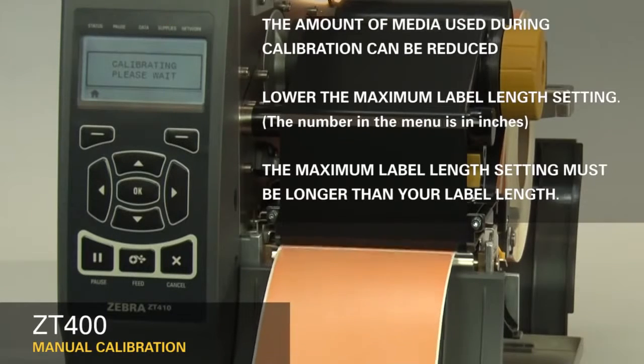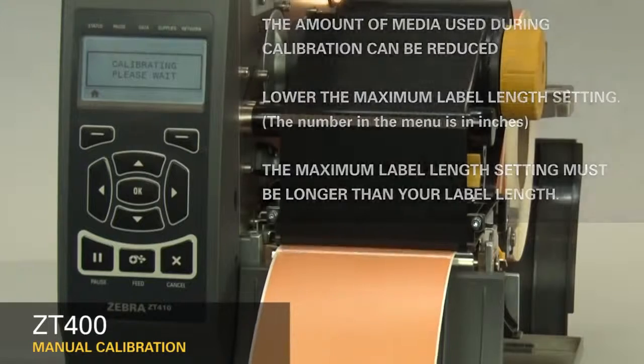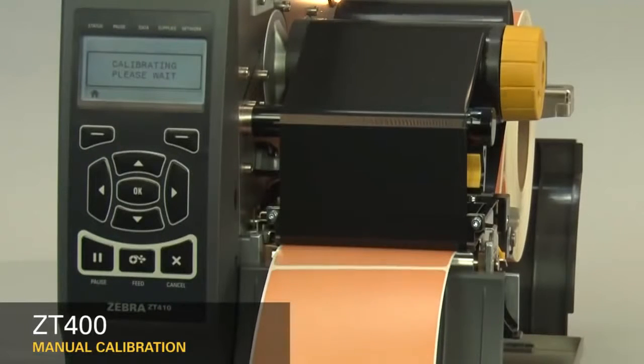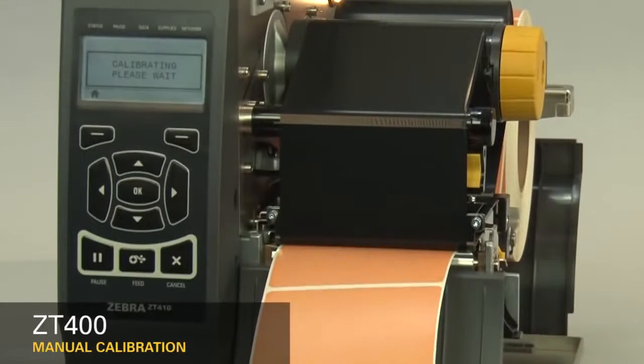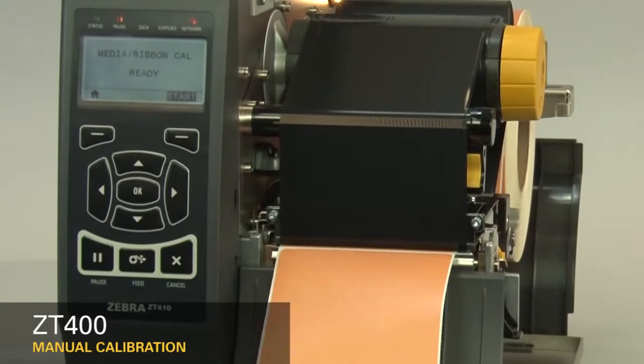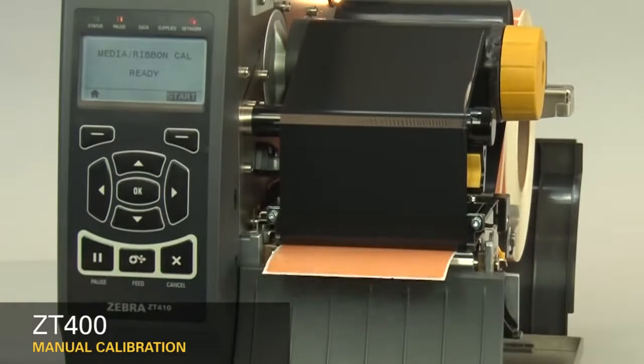Please note that the number in the menu is in inches. When calibration is complete, the label should stop in the correct location. You can check that your calibration was successful by pressing the feed button and ensuring media feeds to the correct location.